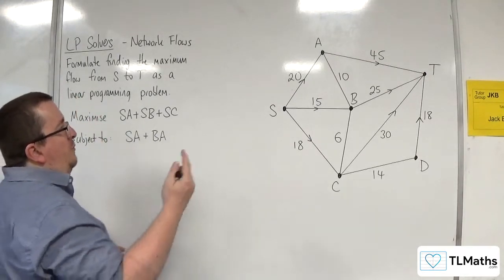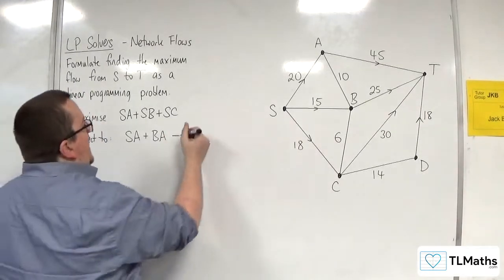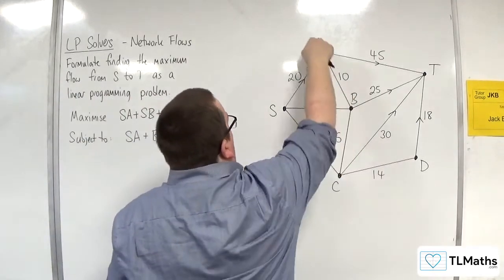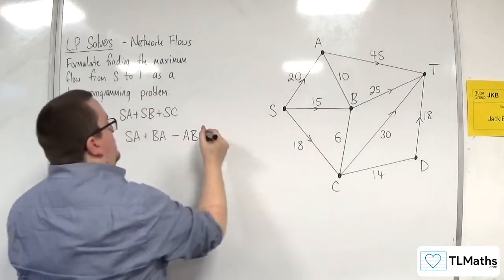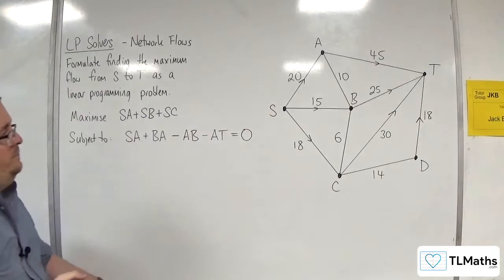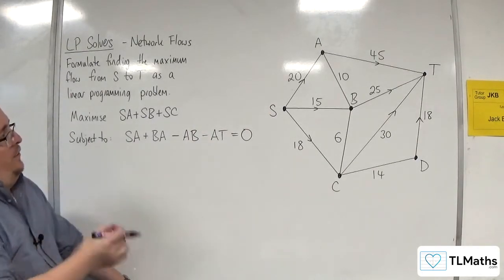So I've got SA plus BA. They're the only two possible routes in. Take away the routes going out. So that's either AB. So I could either come in that way or go out that way because it's undirected. And from A to T, so take away AT. And that's got to be equal to zero. So that's vertex A.